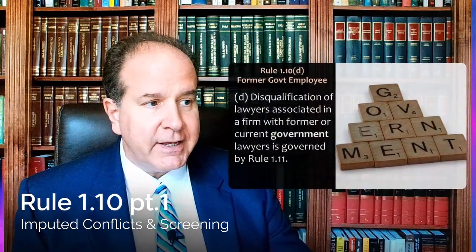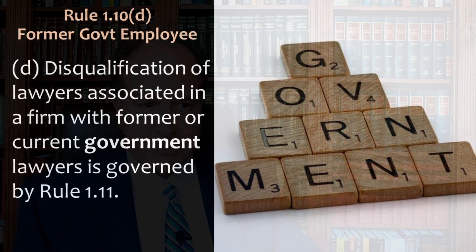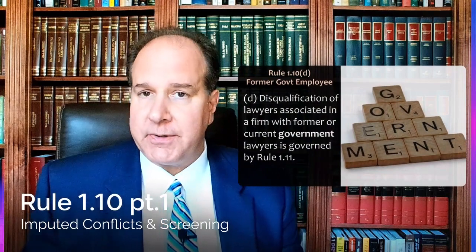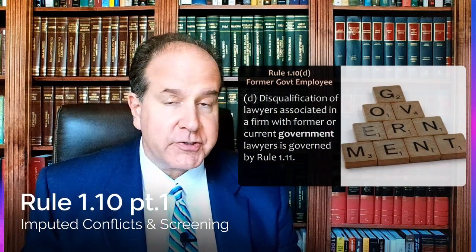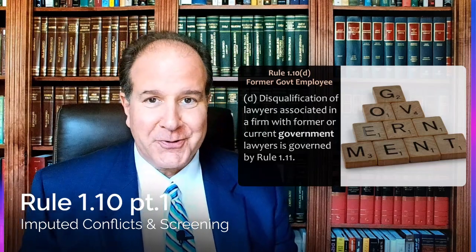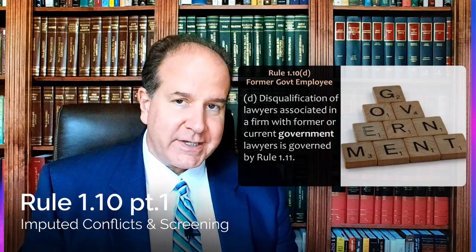Rule 1.10(d) basically says this rule doesn't apply to government lawyers — we're going to have a whole separate standalone rule for that. That's Rule 1.11: disqualification of lawyers associated in a firm with former or current government lawyers is governed by Rule 1.11. It's very common for lawyers who are government lawyers to leave and go into private practice, so we'll have a whole standalone rule about those types of conflicts and screening. Rule 1.10 doesn't apply to them; Rule 1.11 does instead.